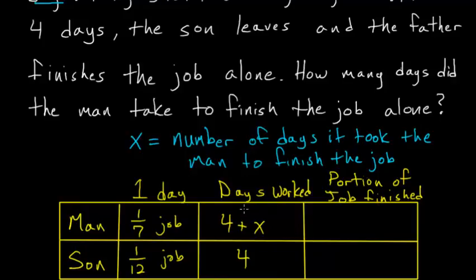So the amount of the job he finishes will just be the product of these two. So it would be four plus x divided by seven.